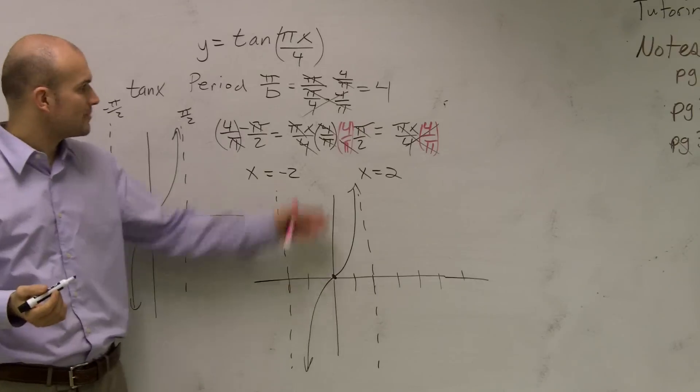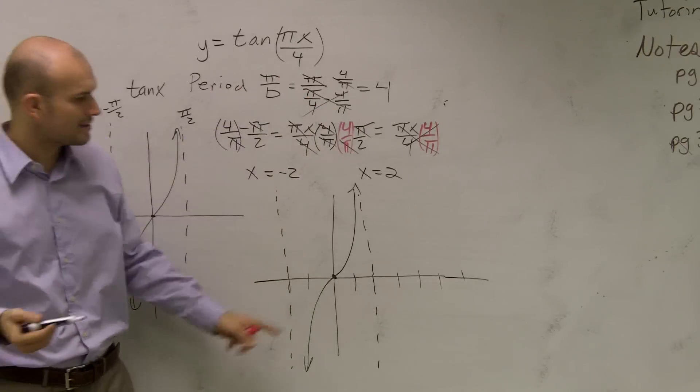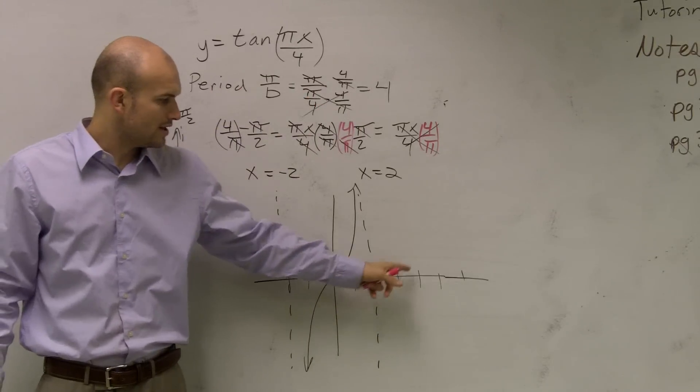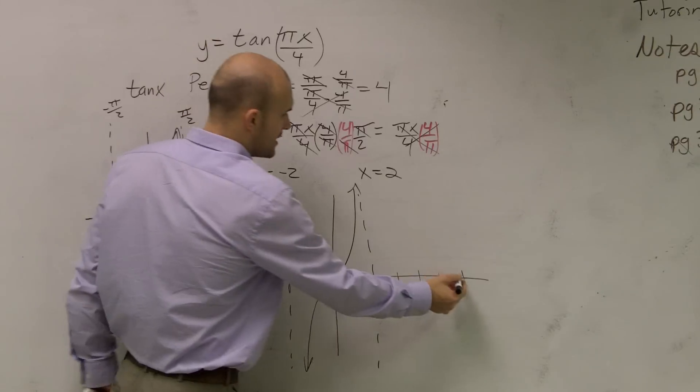If we want to add another period—your periods are 4—I'll add 4 more units: 1, 2, 3, 4, and that creates my next asymptote.